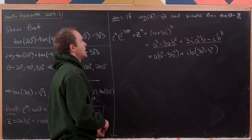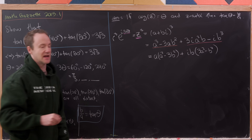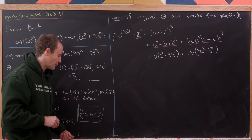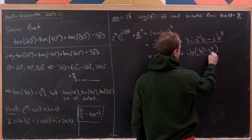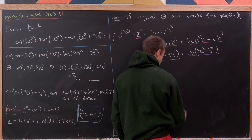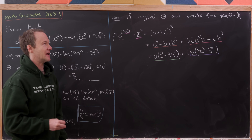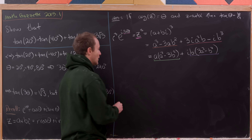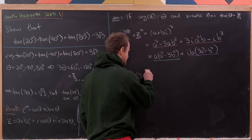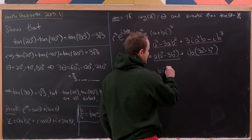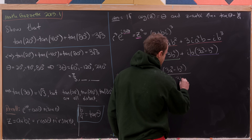Since the argument of z is theta, the argument of z cubed is 3 times theta. The argument of z cubed also equals the imaginary part divided by the real part in the expansion. So the tangent of 3 theta equals b times (3a squared minus b squared) over a times (a squared minus 3b squared). Rewriting by multiplying numerator and denominator by 1 over a squared gives us: (b over a) times (3 minus (b/a)² ) over (1 minus 3(b/a)²).